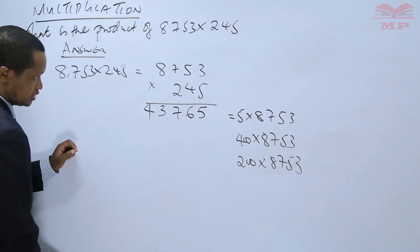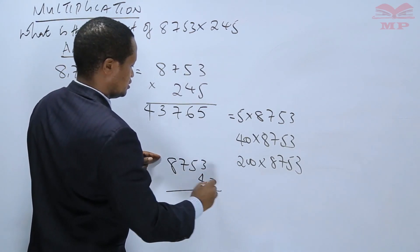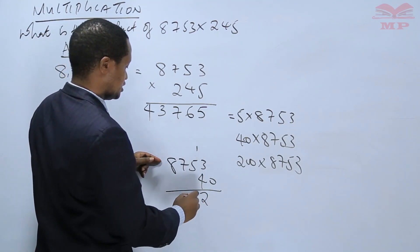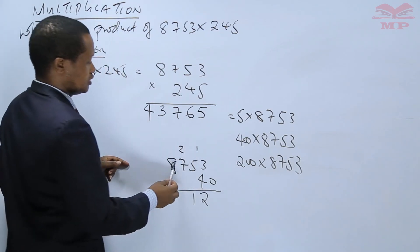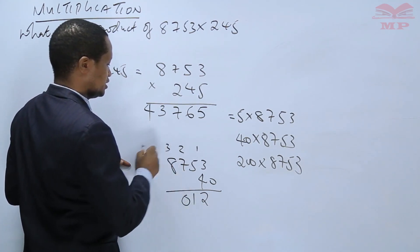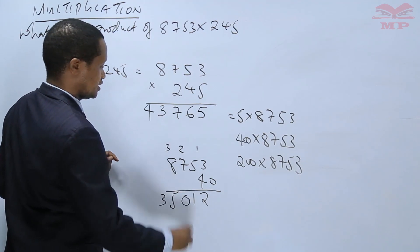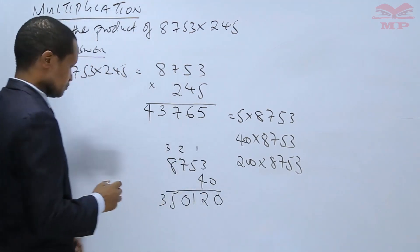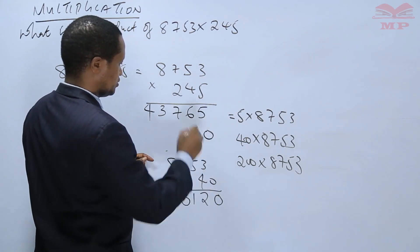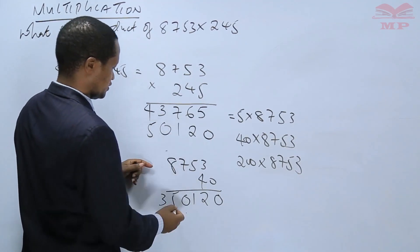Now multiply 8,753 times 40: 3 times 4 is 12, write 2, carry 1. 5 times 4 is 20, plus 1 is 21, write 1, carry 2. 7 times 4 is 28, plus 2 is 30, write 0, carry 3. 8 times 4 is 32, plus 3 is 35. There is a 0 for the tens place, so we write 0, 2, 1, 0, 5, 3.